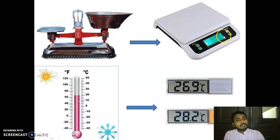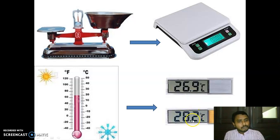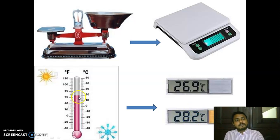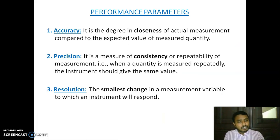For the thermometer, the next increment goes from 28.2 to 28.3, so the increment is 0.1 degrees. The resolution of this instrument is 0.1 degrees Celsius. Resolution means the smallest digit or the smallest value that can be indicated by the measuring instrument between two successive measurement steps.